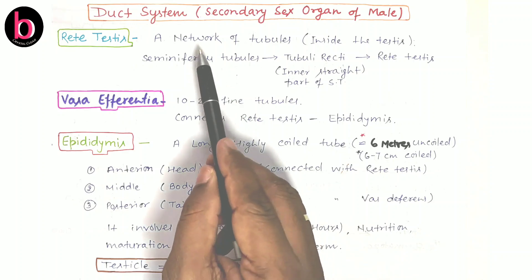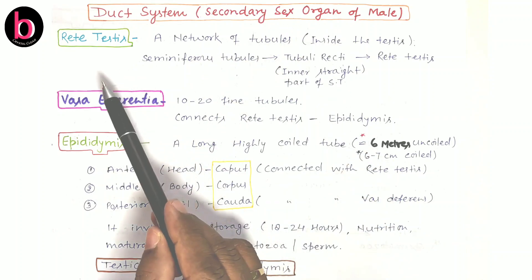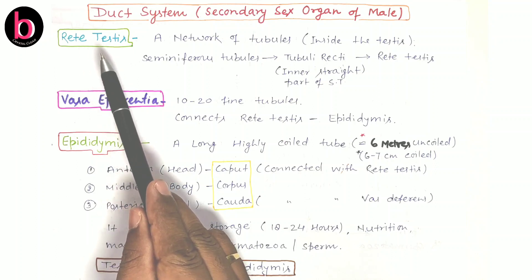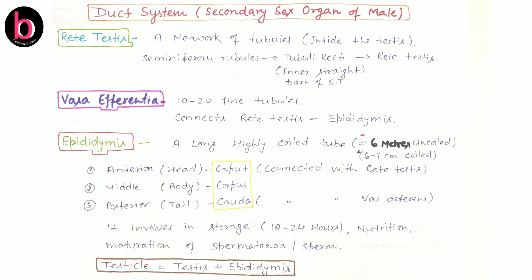The duct system is the first part of the secondary sex organ. The first structure in the duct system is rete testis. Rete testis is a network of tubules found inside the testis. Its location is very important — rete testis is present inside the testis, while the rest of the structures like vas efferentia, epididymis, and vas deferens are all outside the testis.